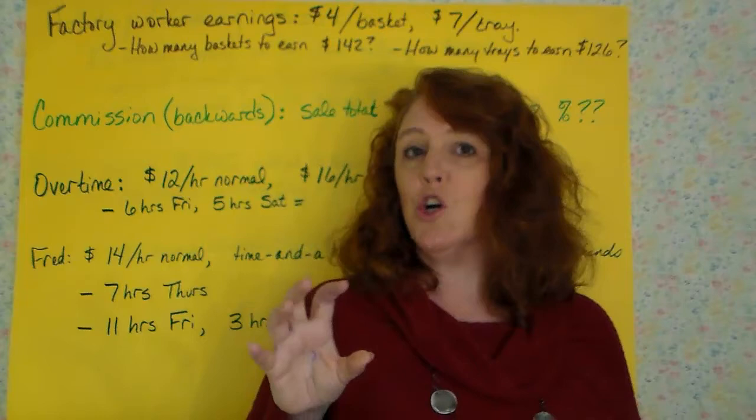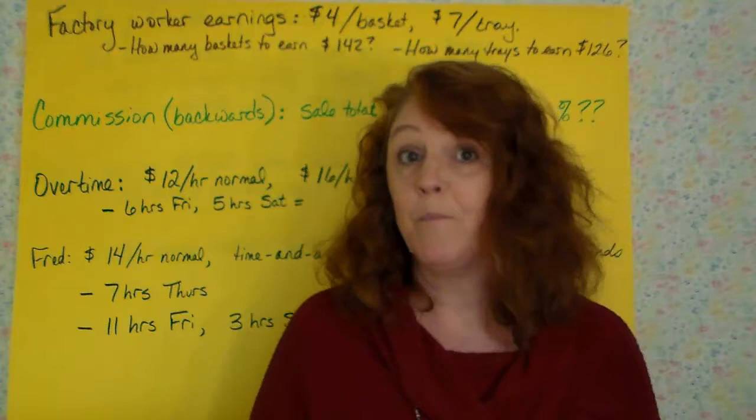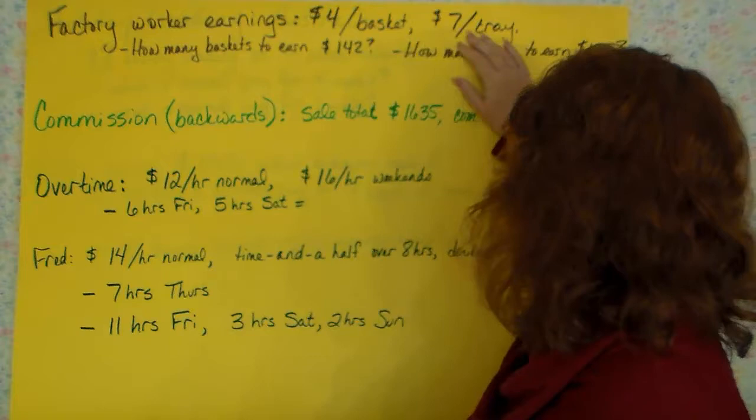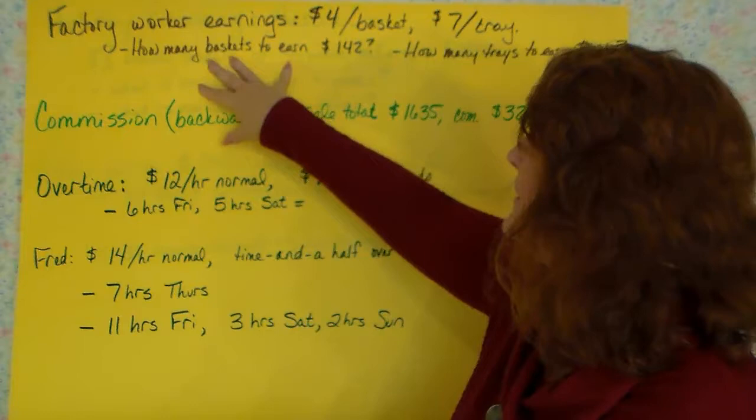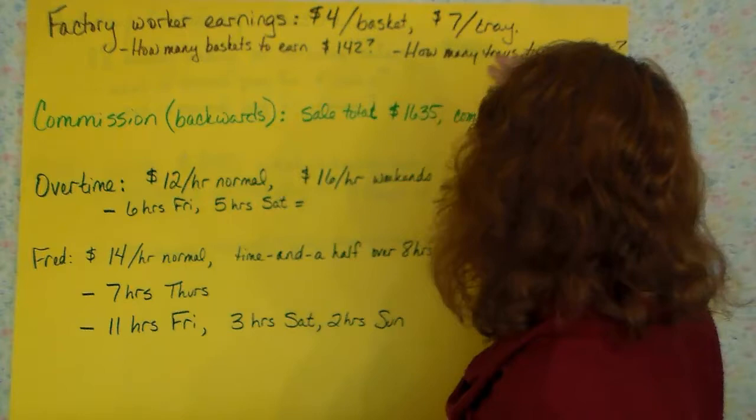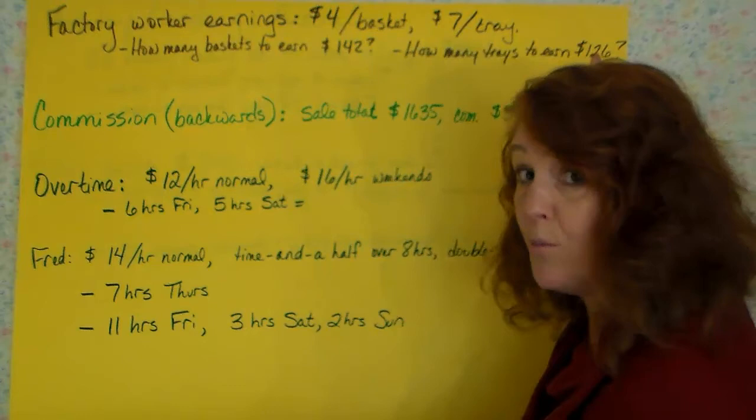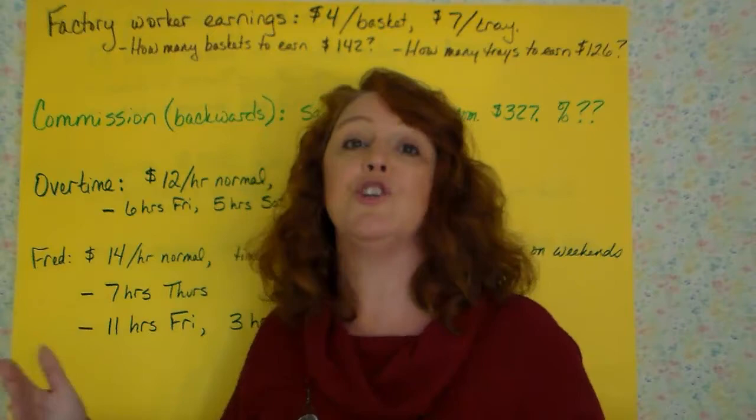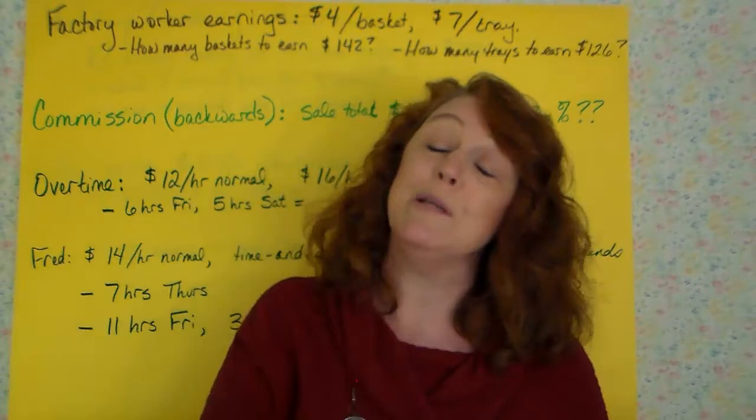What if we were a factory worker and that factory worker earns their money, not hourly, but by how much they accomplish. And this particular factory worker earns $4 for every basket they put together and $7 for every tray. And when they ask, how many baskets do I need to earn $142? This is a division problem. And then how many trays do I need to earn $120? This is also a division problem. And eventually, it's going to ask you for percentages. What percentage of this money is this and that? And so you're just going to set them up the way we've been setting up all of the other percentage problems.